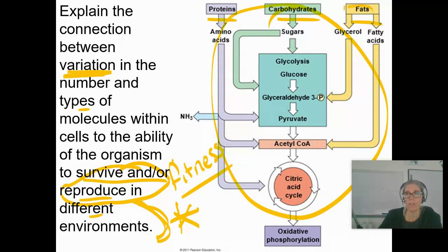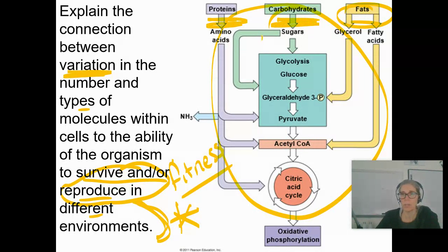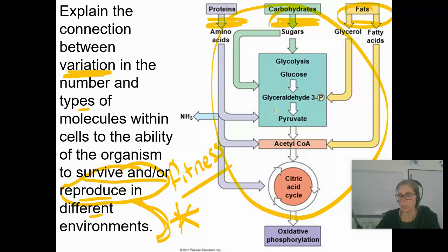Another way to look at this is that we can eat more than just carbohydrates. If I have only fats to eat for a while, I'm going to be okay — I don't have to have sugar. If I have just proteins to eat, I'm okay — maybe better, because I've got some nitrogen I might need for something else. All right, I think that's the end of my story.